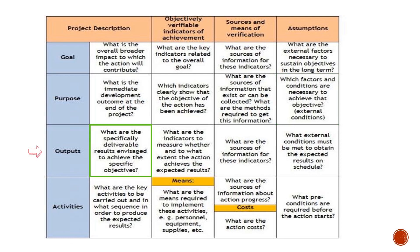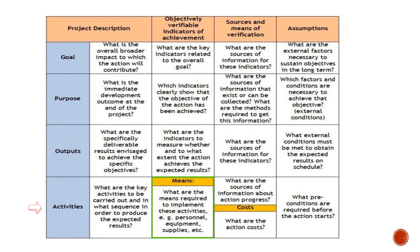For outputs, write the immediate results. In the project description, what are the simple indicators — the possible indicators to measure whether and to what extent the action achieves the expected results? What are the sources of information for these indicators? What are the external conditions and risk factors? For activities, list them bullet-wise. Include required means such as cost, time limitations, and sources of verification. At the end of activities, write what are the preconditions required before the action starts and what conditions are available to start those activities.